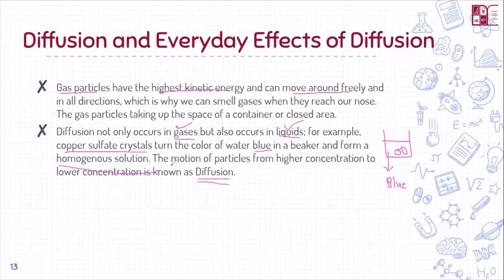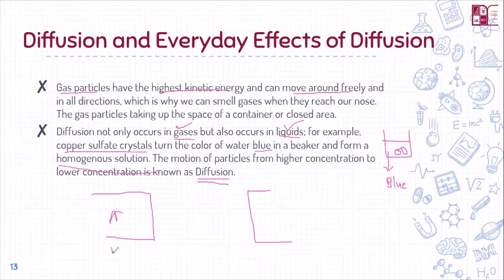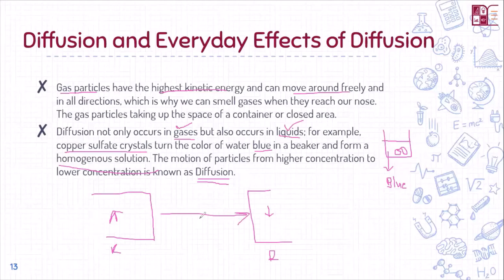From all the information, the particles move from a higher concentration to a lower concentration. For example, if the food was cooking in the kitchen and you are in your room, you will smell it. This is because the gas particles travel fast — they have moved from a higher concentration to a lower concentration. This is known as diffusion. The same applies to the copper sulfate crystals example.